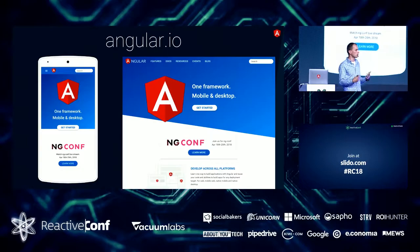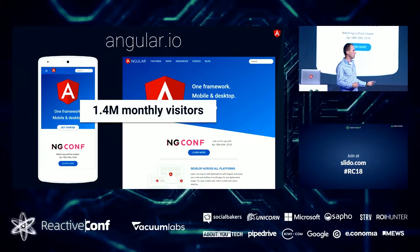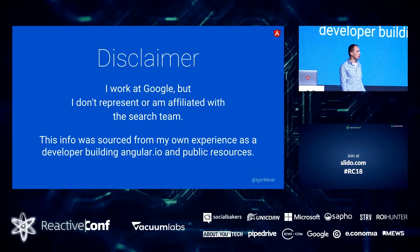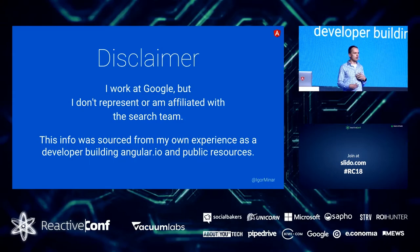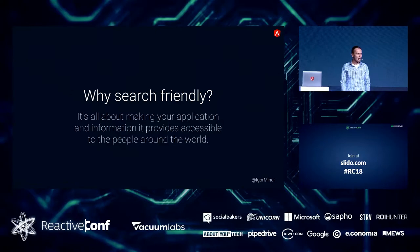I'm happy to say that today about 1.4 million unique visitors come to Angular.io monthly, and most of them come through search. So this is definitely possible, and I'm going to show you how. Before I go any further, let me give a little disclaimer. Even though I work at Google, I'm not affiliated with the search team and I don't represent them. All of the information I'm going to share was gathered through experiments, building Angular.io as a developer, and reading public information. I'm not going to spill any beans that were secret in the past.